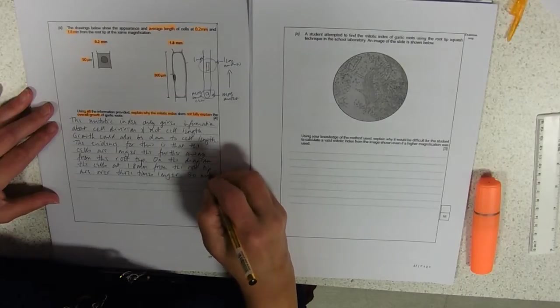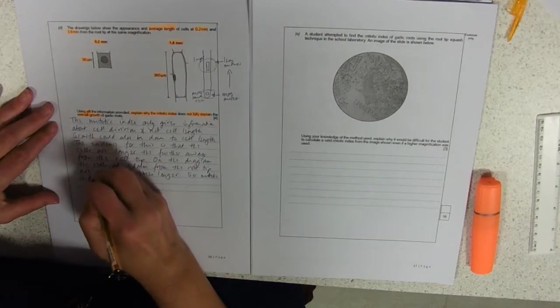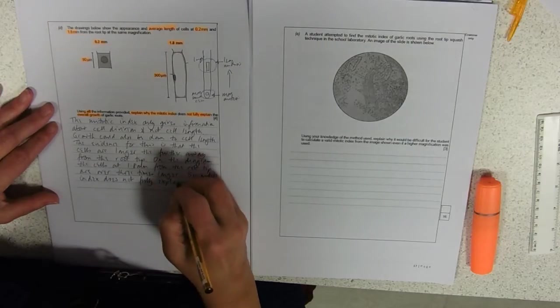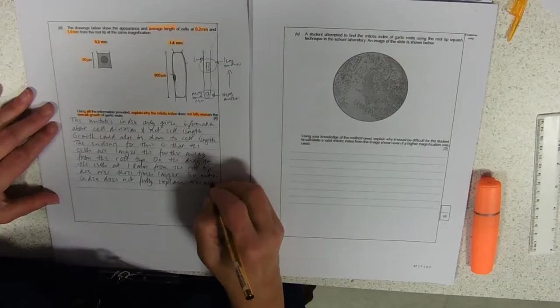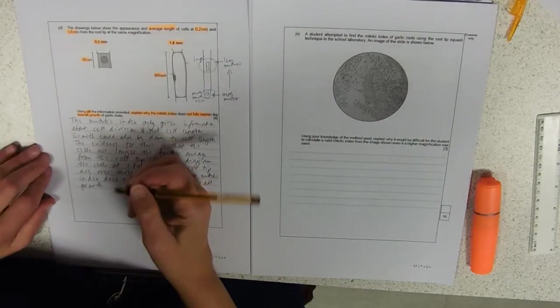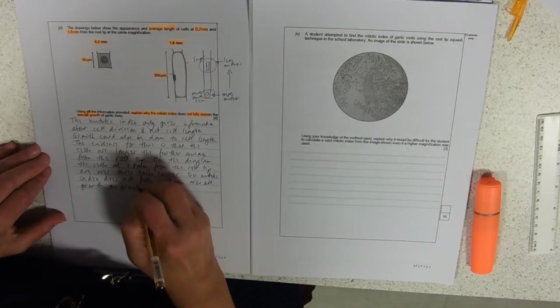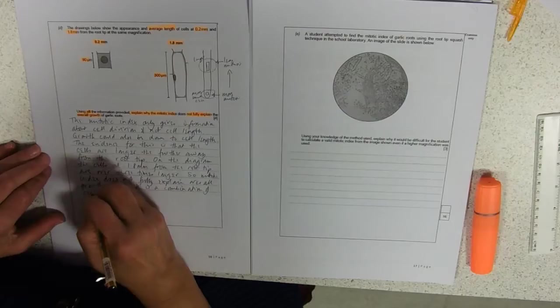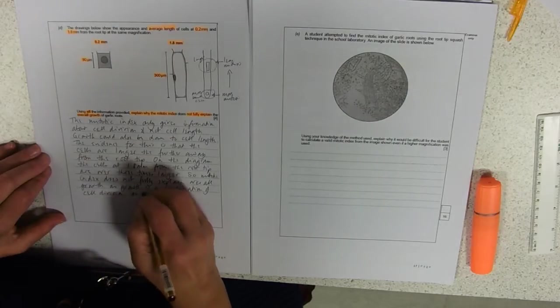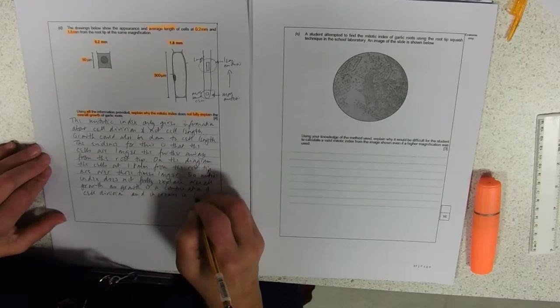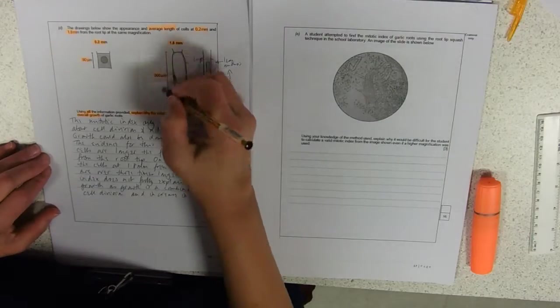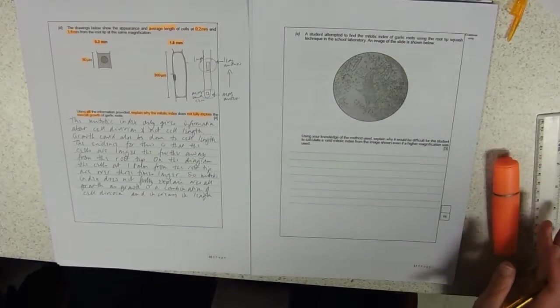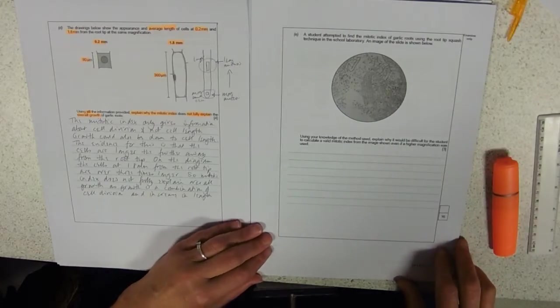So, mitotic index does not fully explain overall growth as growth is a combination of cell division and increase in length. And I'd just be a bit wary because you've only got the length and width looks almost the same about saying increase in size or something vague like that. That was a long answer. Four marks.